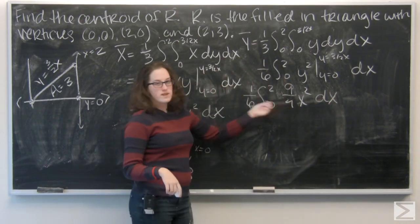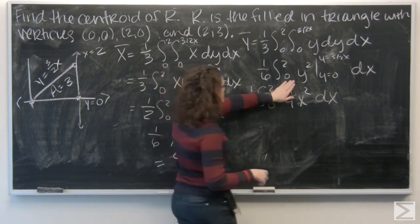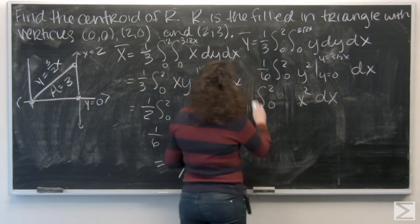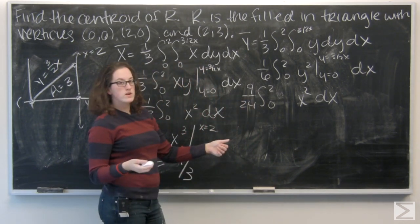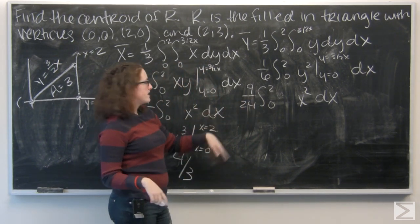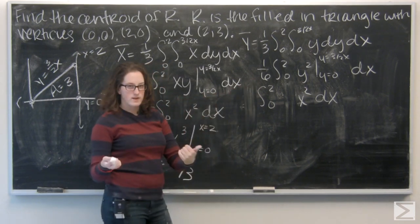Now, I want to go ahead and pull that 9 fourths out. So, get the 9 fourths. And we get 9 over 24. But, I can simplify this to 3 eighths. Right? Divide the top and the bottom by 3.